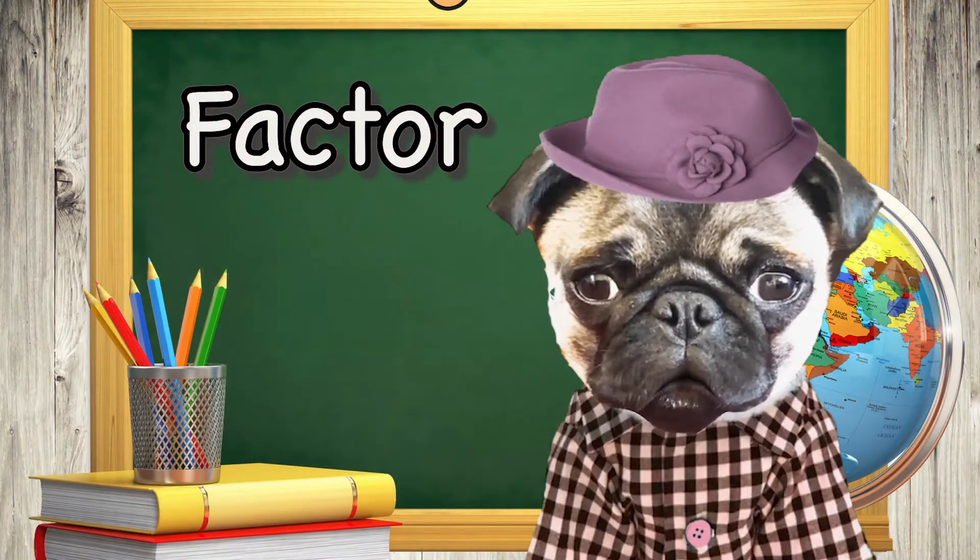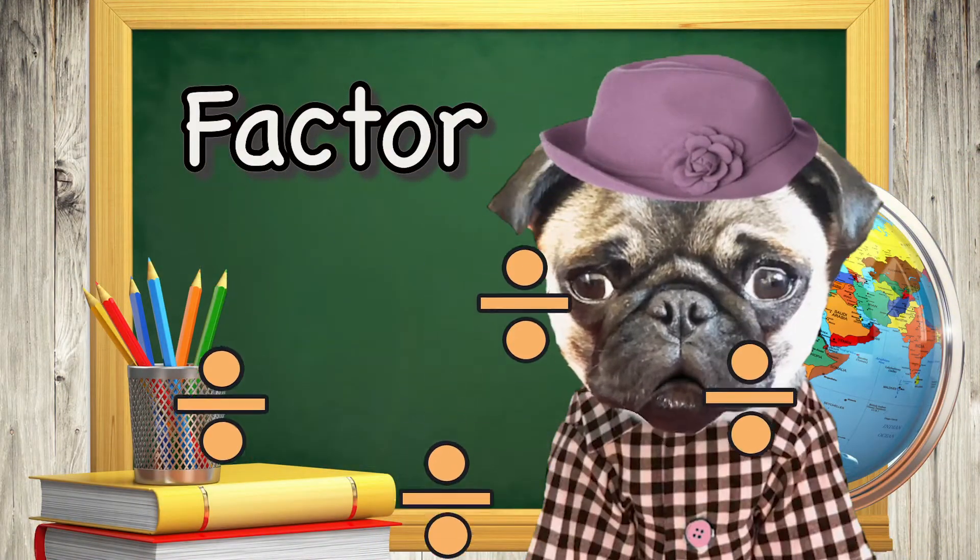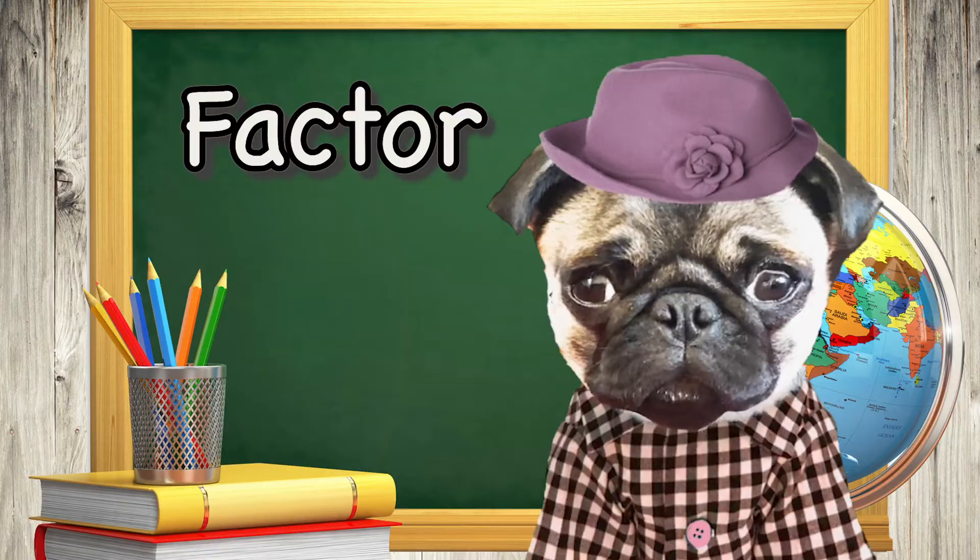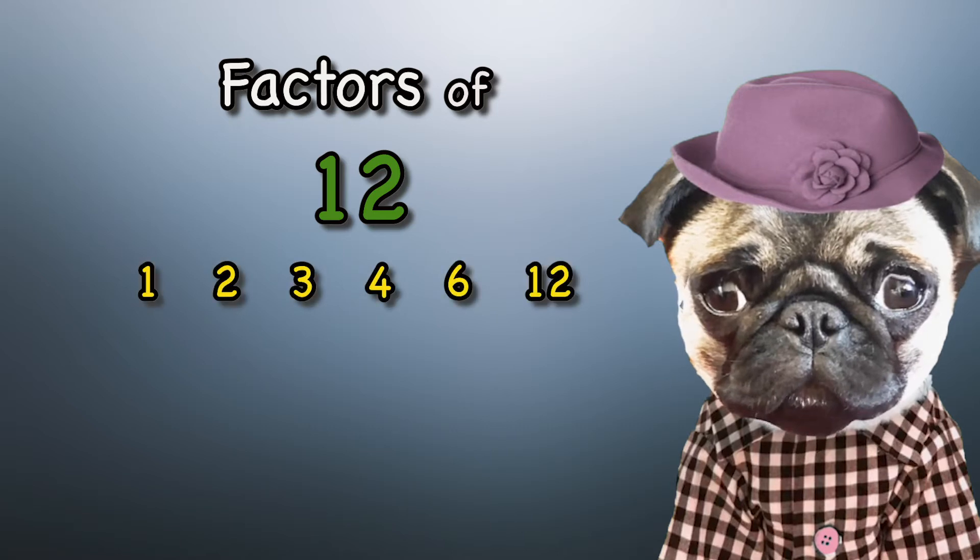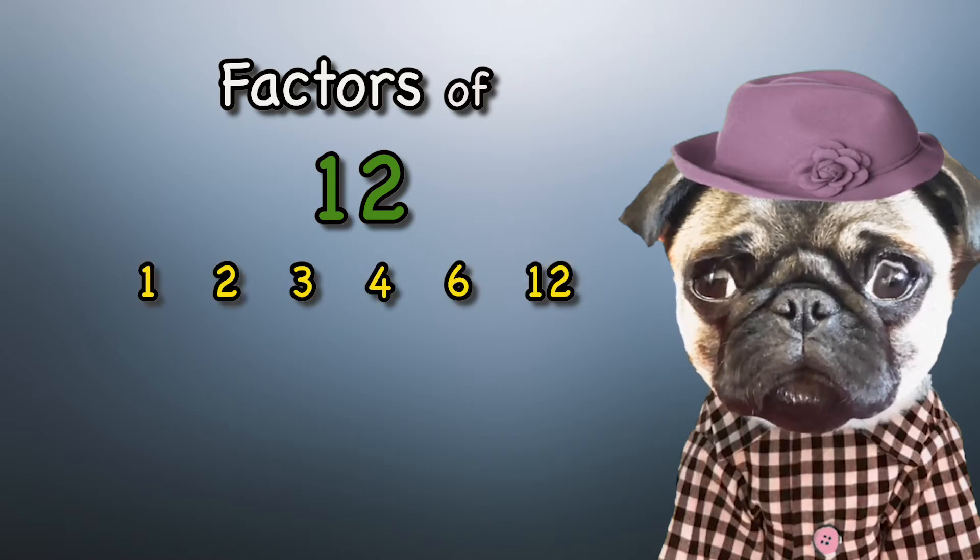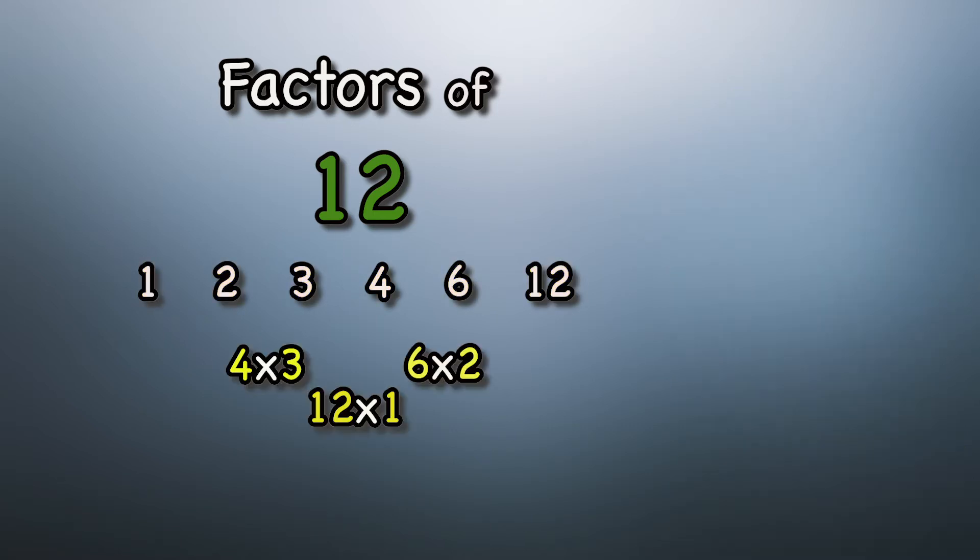A factor is a number that divides evenly into another number. For example, find the factors of 12. These are all numbers that can be divided into 12, or they can also be multiplied to get 12.